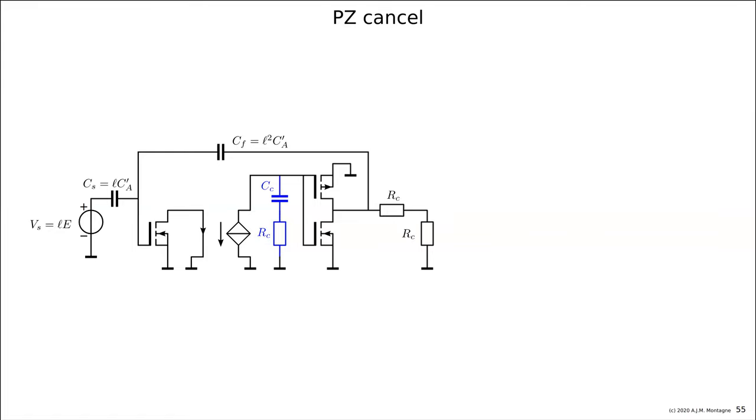And the only pole I have already in the loop is the parallel connection of CF in series with CS plus CIS_S1 and two times RC. So that is a frequency of a pole, and at that frequency I place this zero.